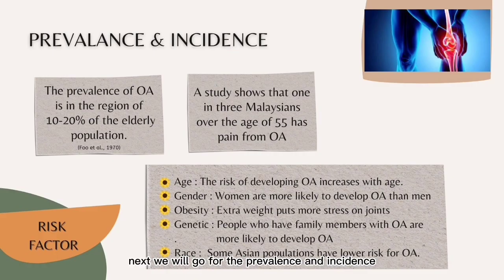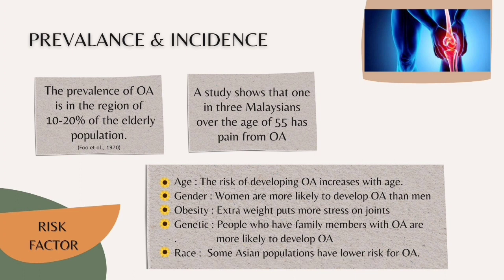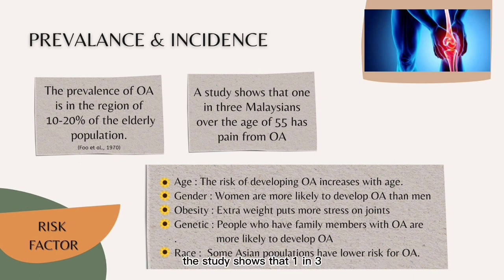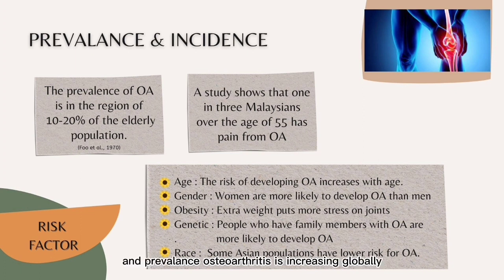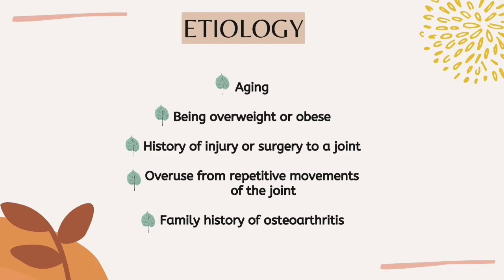We will now go over the prevalence and incidence. The prevalence of knee osteoarthritis in Malaysia was estimated to be 10% to 20% of the elderly population. Studies show that 1 in 3 Malaysians over the age of 55 has pain from osteoarthritis. The prevalence of osteoarthritis is increasing globally over the years.